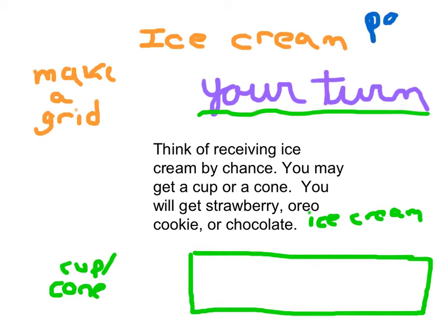So you have to hit pause now unless you're already coming back. So filling in cup or a cone, there's going to be two rows. And then the different types of ice cream: strawberry, Oreo cookie, and chocolate.